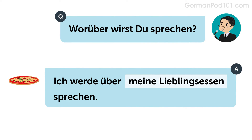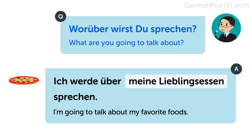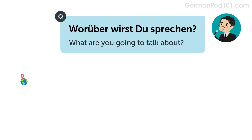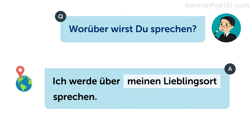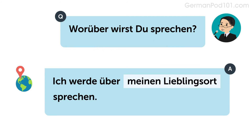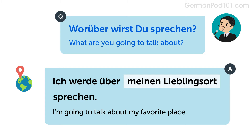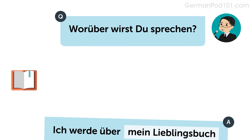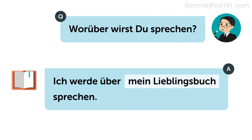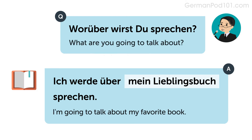Let's look at some examples. Listen and repeat or speak along with the native speakers. Worüber wirst du sprechen? — Ich werde über meine Lieblingsessen sprechen. What are you going to talk about? I'm going to talk about my favorite foods. Worüber wirst du sprechen? — Ich werde über meinen Lieblingsort sprechen. What are you going to talk about? I'm going to talk about my favorite place. Worüber wirst du sprechen? — Ich werde über mein Lieblingsbuch sprechen. What are you going to talk about? I'm going to talk about my favorite book.